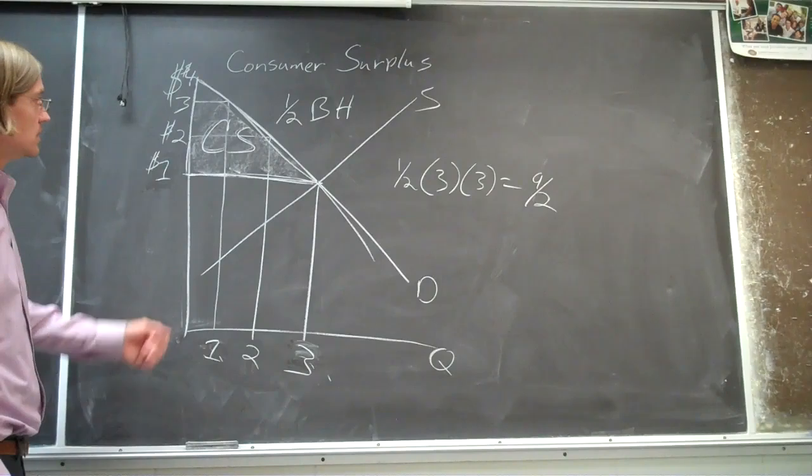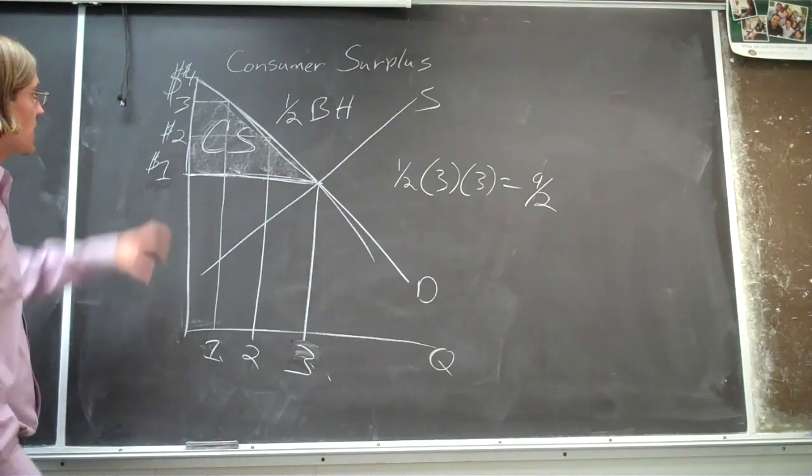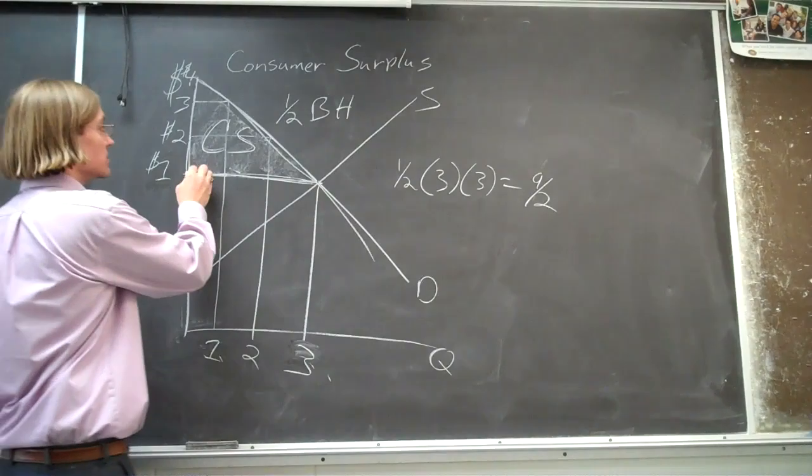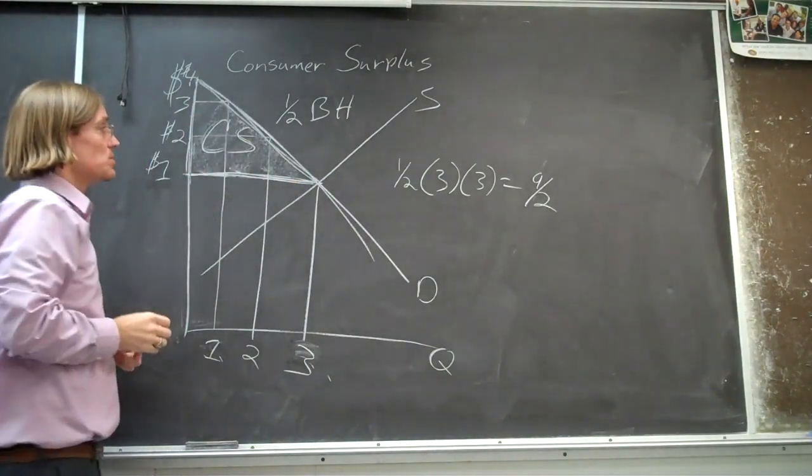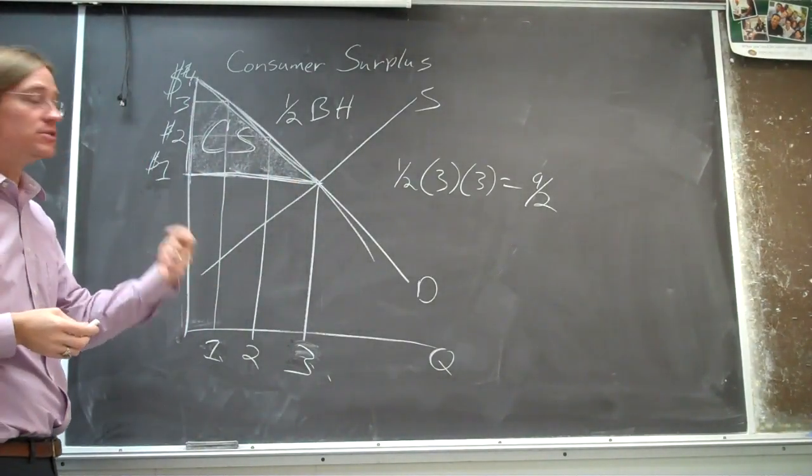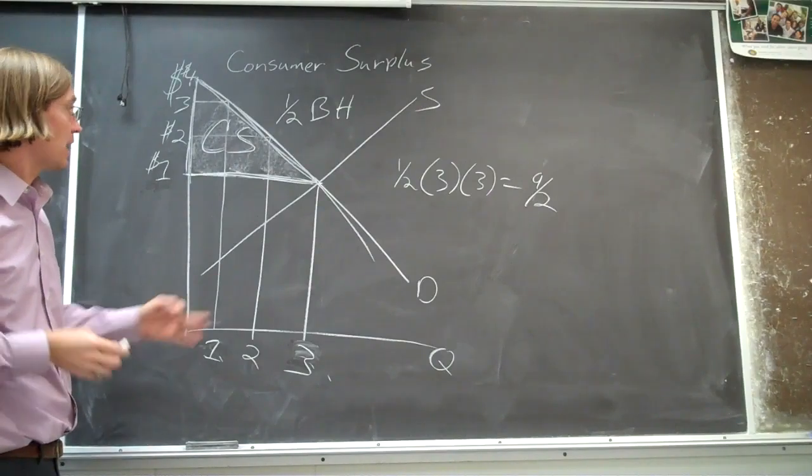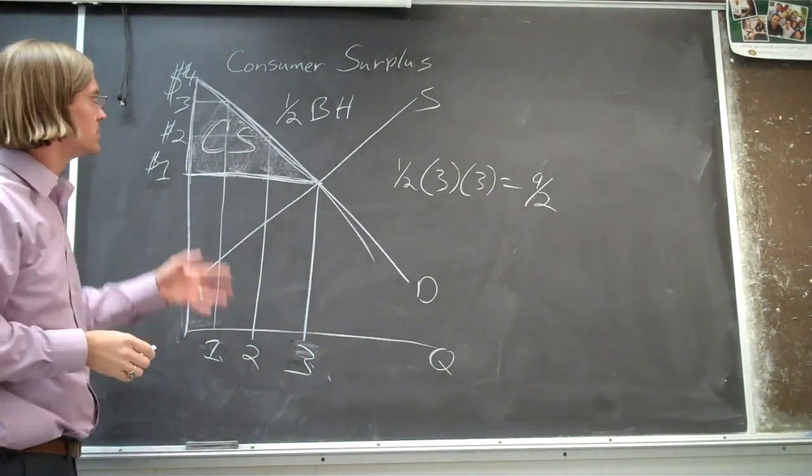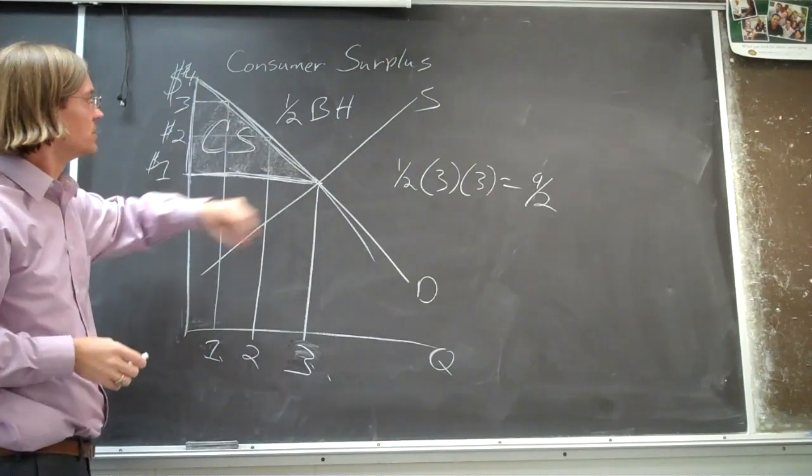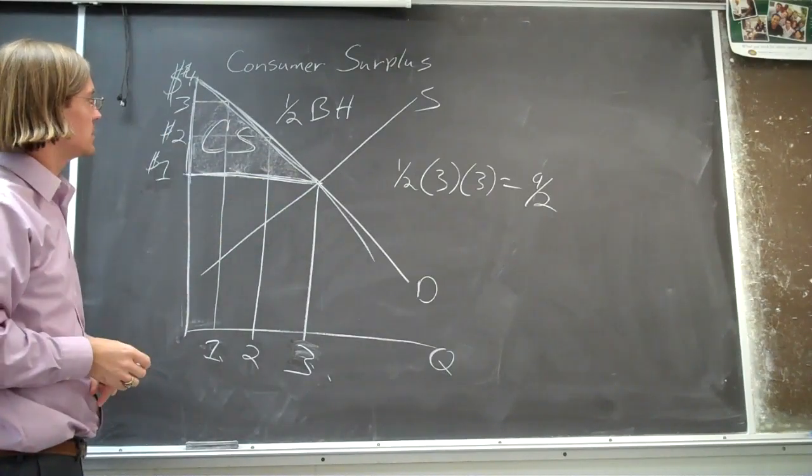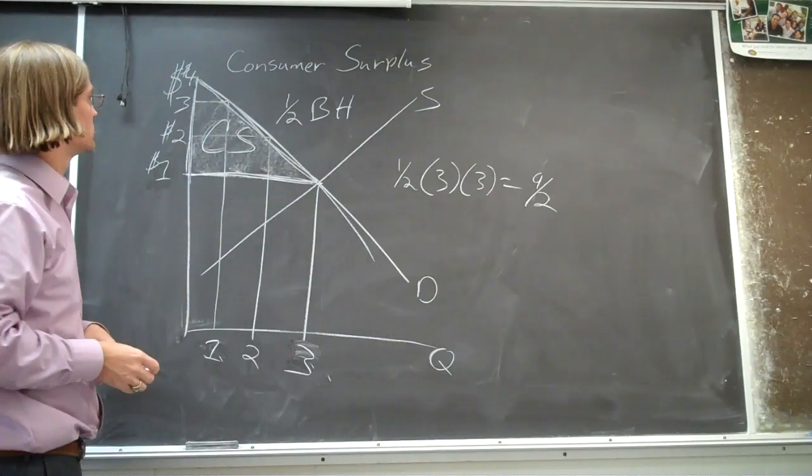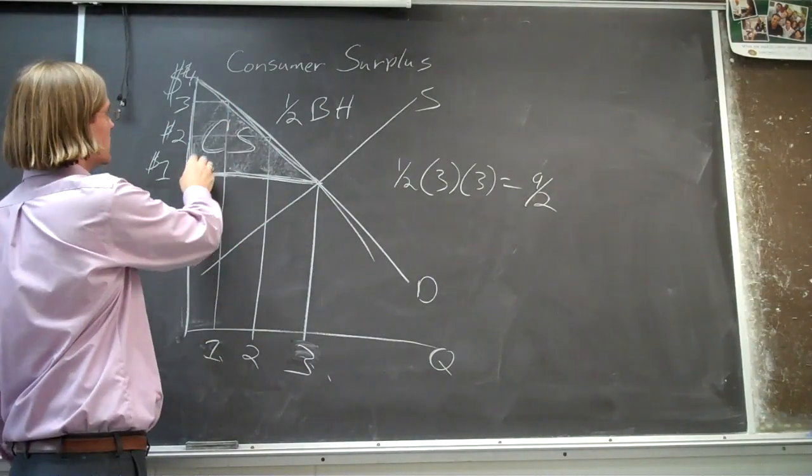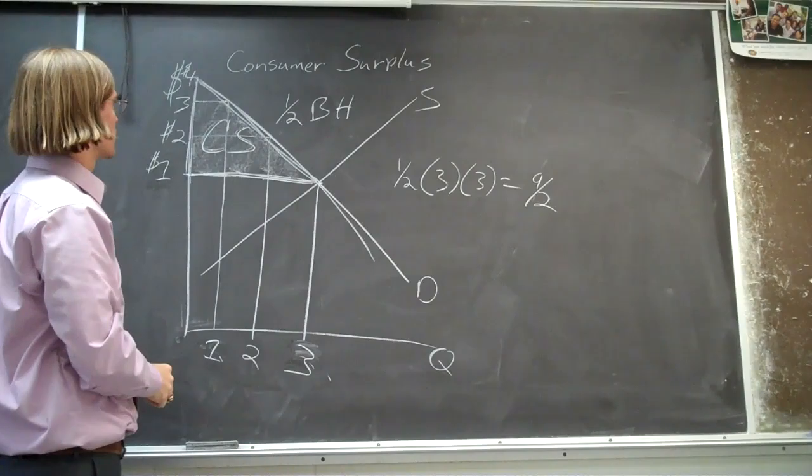So that's that. You can put a numerical value - so four and a half dollars. That's the consumer surplus you got when you bought, consumed those three hamburgers. You got, you got about - and it's not exact because we're looking at discrete units here and not this continuous function. But you know, you got a couple dollars. You paid a dollar. You got three dollars worth of consumer surplus.